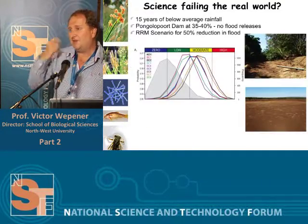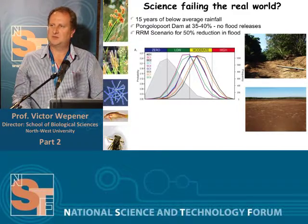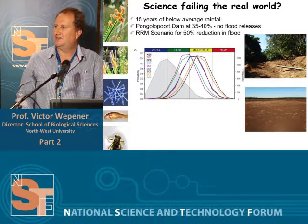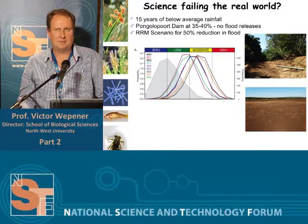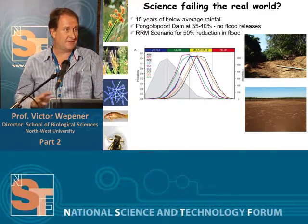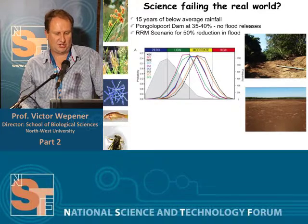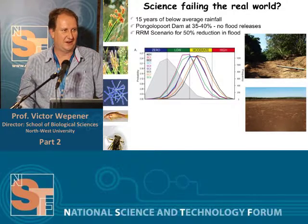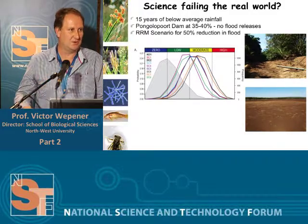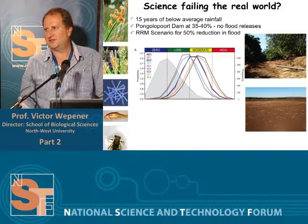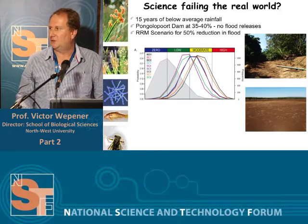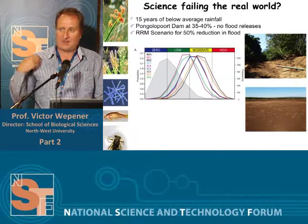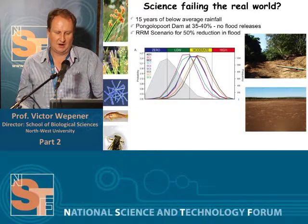Over the past 15 years, however, that region of KwaZulu-Natal has been experiencing a prolonged drought. For 12 of those 15 years, they've received less than average rainfall. At this stage, the Pongola Dam is around 35 to 40% of its capacity, which means the pumps on the Swaziland side are high and dry, so Swaziland is not able to extract any water from the dam. For the past two years, the Department of Water and Sanitation have not been able to allow for any flood releases, meaning the floodplain did not receive the water required for the inundation of the pans.